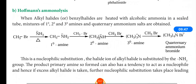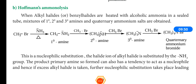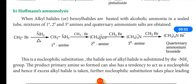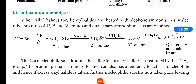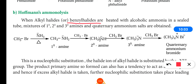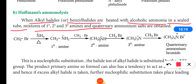The next method is the preparation of amine from alkyl halide by Hoffman's Ammonolysis. Ammonolysis means addition of ammonia. When alkyl halides or benzyl halides are heated with alcoholic ammonia in a sealed tube, a mixture of primary, secondary, and tertiary amines, and also quaternary ammonium salts are formed.